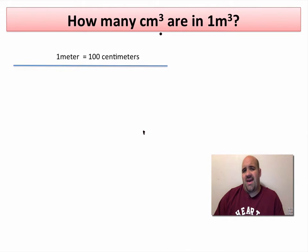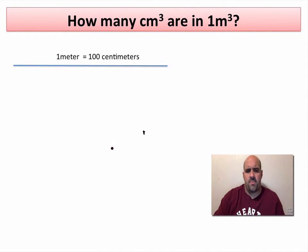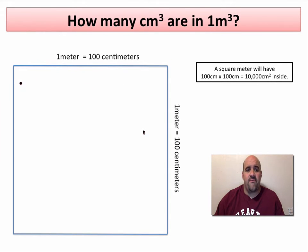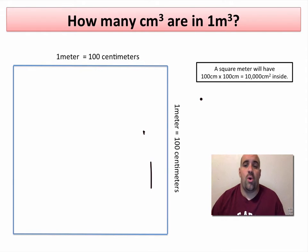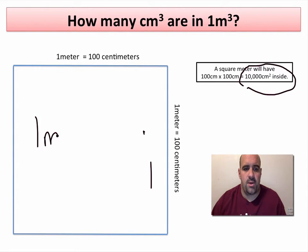To answer the question of how many centimeters cubed are in a meter cubed, let's start simpler. We know that one meter is 100 centimeters — if you have a meter stick, there are 100 centimeters on it. If we had a square meter — one meter by one meter — how many centimeters would that be? Well, one meter is 100 centimeters, so you have 100 centimeters this way and 100 this way. So a square meter will have 10,000 centimeters squared inside, or 100 by 100. A square meter represents one meter squared, which is 100 centimeters by 100 centimeters.